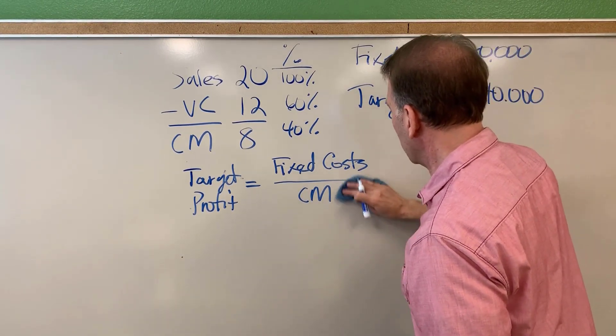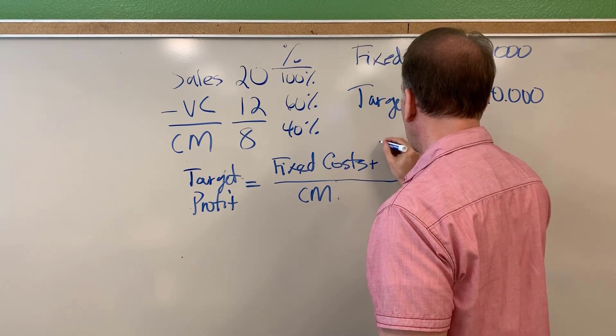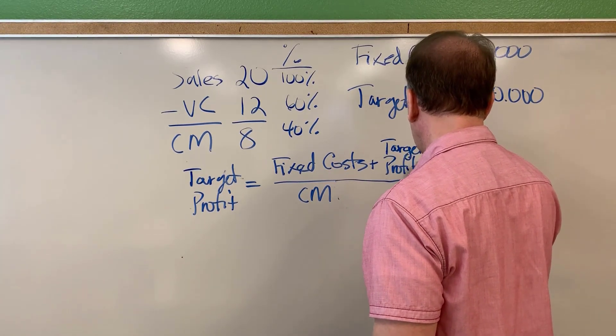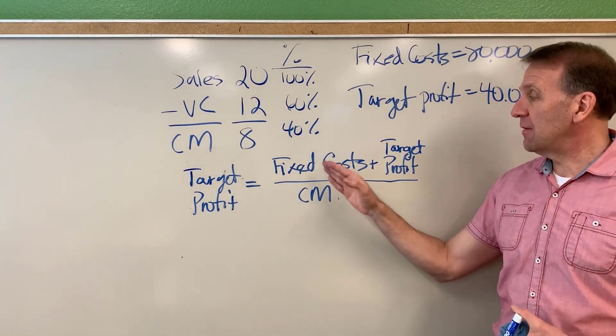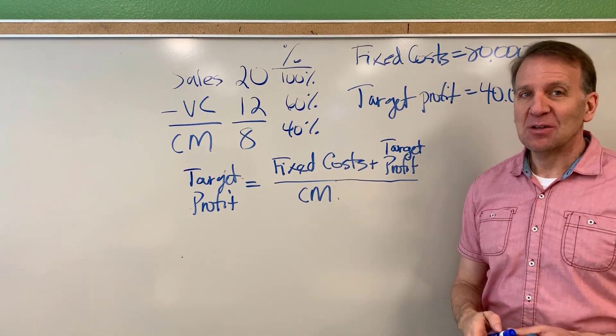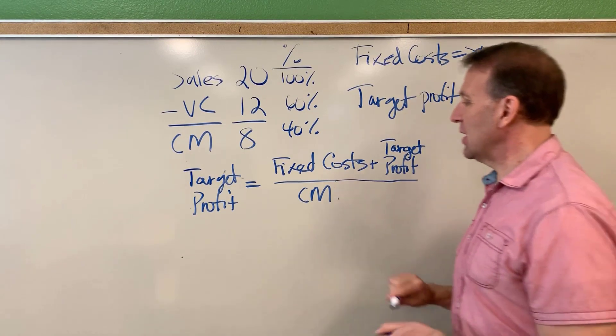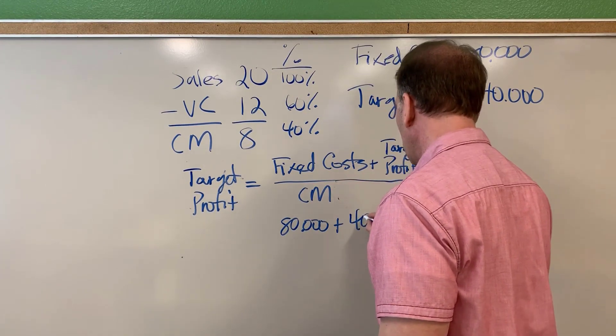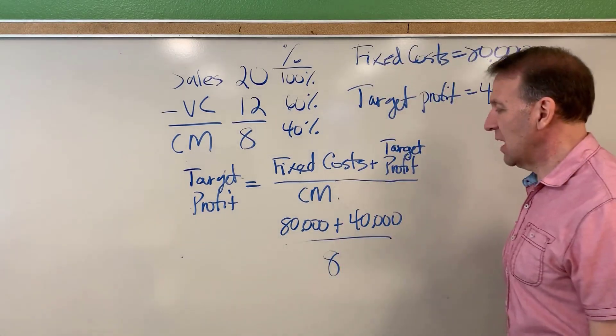Let me erase this and write down the new formula. If we're doing target profit in units, this would be our new formula. It's going to be the fixed cost plus our target profit divided by the contribution margin. Maybe you've already calculated in your head. My fixed costs are 80, my target profit's 40.